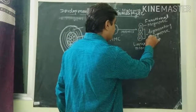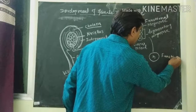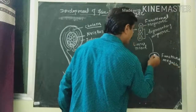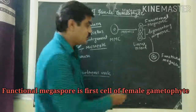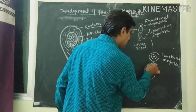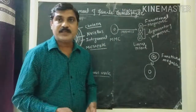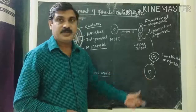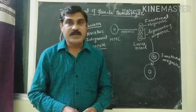After degeneration of the three megaspores, there is one functional megaspore, which is haploid in nature. This functional megaspore is nourished by the nucellar cells, because the nucellar cells are nutritive and supply food material to the functional megaspore. This functional megaspore becomes large and then undergoes three successive mitotic divisions.